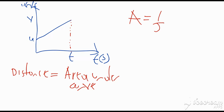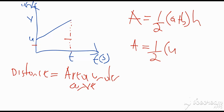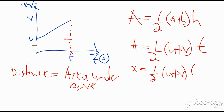The area of a trapezium is equal to half the sum of the lengths of the two parallel sides — which we call a and b — times h, where h is the distance between the parallel sides. Looking at this trapezium, the parallel sides are u and v, so the area becomes one-half times (u + v) times time. This gives us the formula: x equals one-half times (u + v) times t.